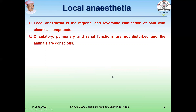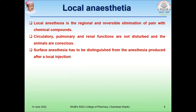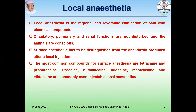Local anesthetics are widely used for minor surgical procedures and are applied locally. They provide regional and reversible elimination of pain using chemical compounds. An advantage of local anesthetic agents is that circulatory, pulmonary, and renal function disturbances, which commonly occur with general anesthesia, do not occur. Surface anesthesia compounds include tetracaine and proparacaine. Injectable local anesthetic agents include procaine, lidocaine, and etidocaine.